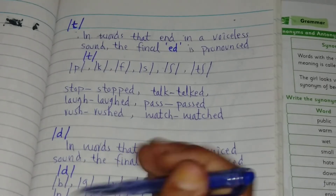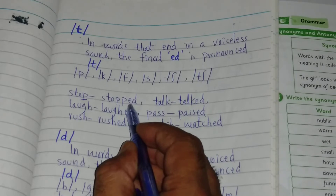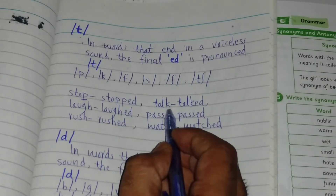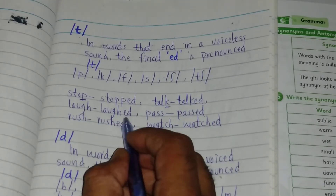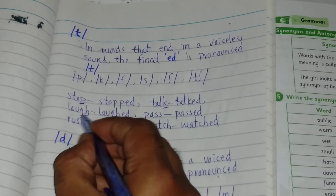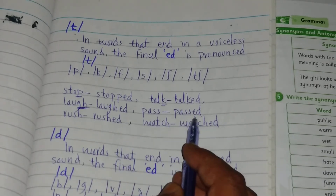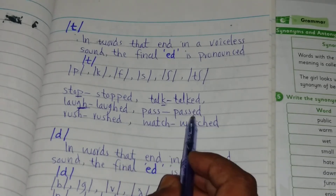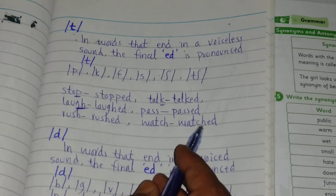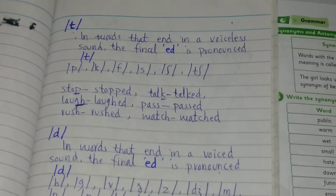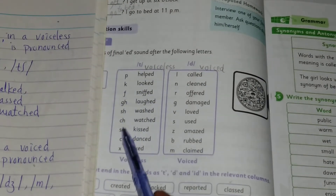For example: 'stop' → 'stopped' — here 'p' is voiceless, so the '-ed' sounds like 't'. 'Talk' → 'talked' — voiceless 'k', so 'talked' with a 't' sound. 'Laugh' → 'laughed' — 'gh' sounds like 'f', so 'laughed' with a 't' sound. 'Pass' → 'passed' — 's' sound gives 't'. 'Rush' → 'rushed' — 't' sound. 'Watch' → 'watched' — 't' sound. These final consonants are all voiceless.